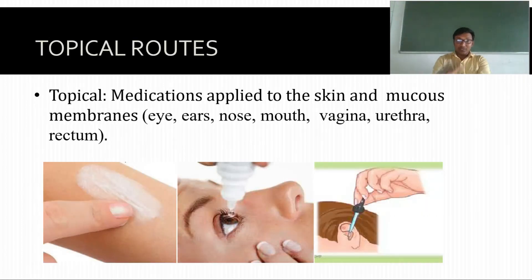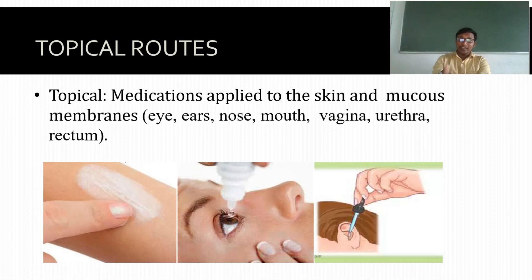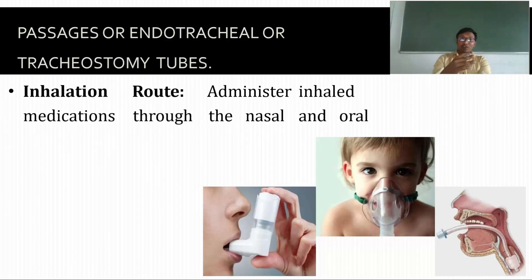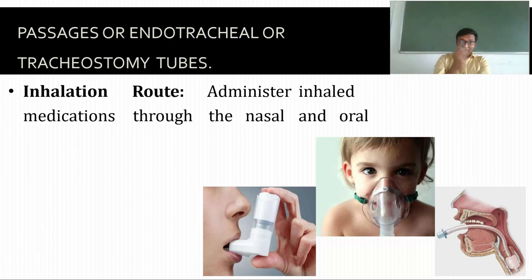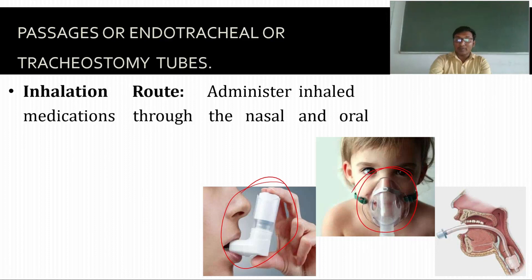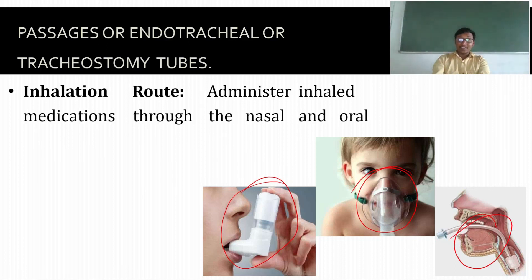For topical routes, we have eyes, ears, nose, mouth, vagina, urethra, and rectum — these are the topical routes where we apply medicine. For the inhalational route, medicine is inhaled either nasally or orally. As you can see, the patient is inhaling with the help of an oxygen mask and nebulizer. With an ET tube, we can also administer medicine. These are examples of inhalational routes.